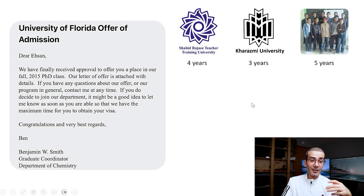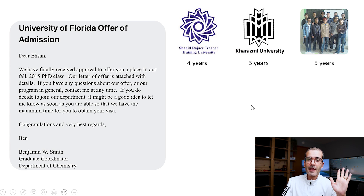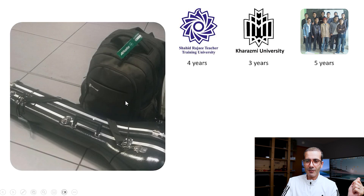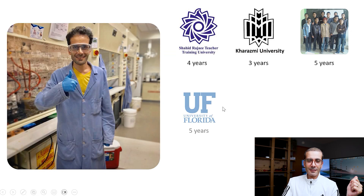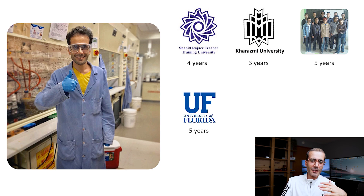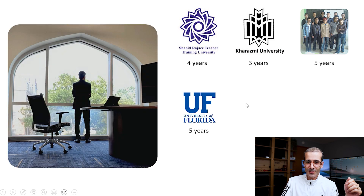Then I applied for grad school. I applied to 15 universities, got admitted into five of them, and decided to go to University of Florida. That was my acceptance email, and then we packed everything and came to the US in 2015, where I did my PhD in chemistry in the Green Lab. I came as an inorganic chemistry student and then changed my major to organic — that's another story.